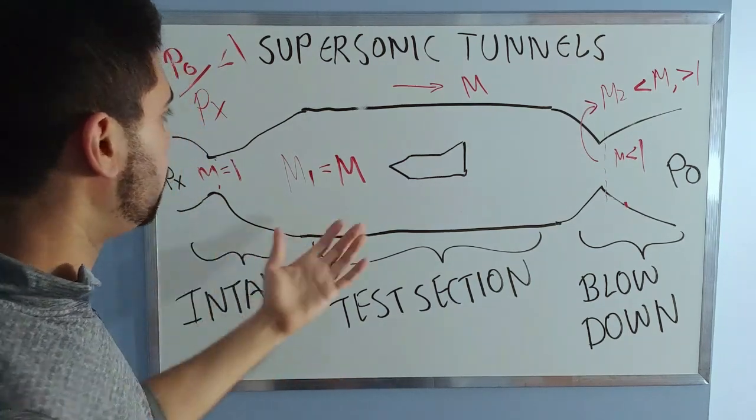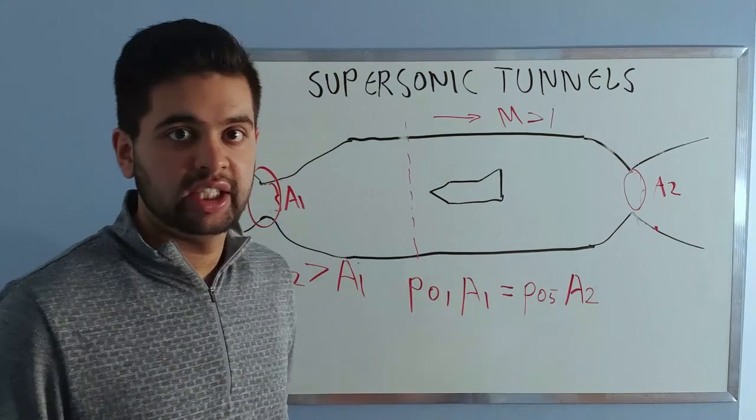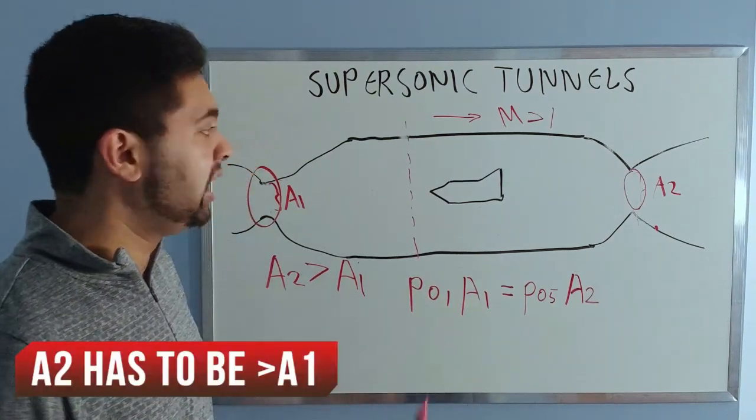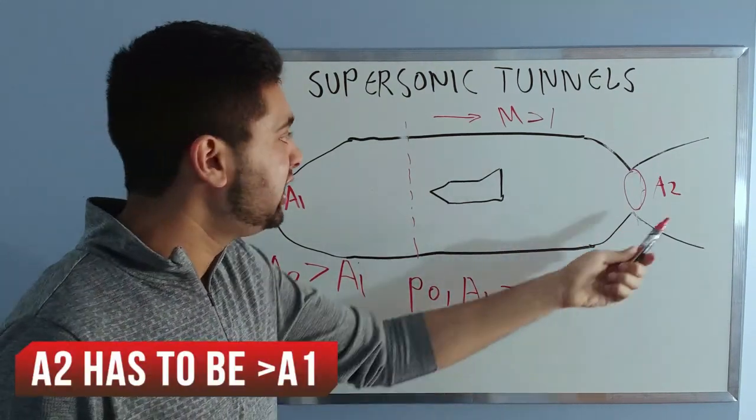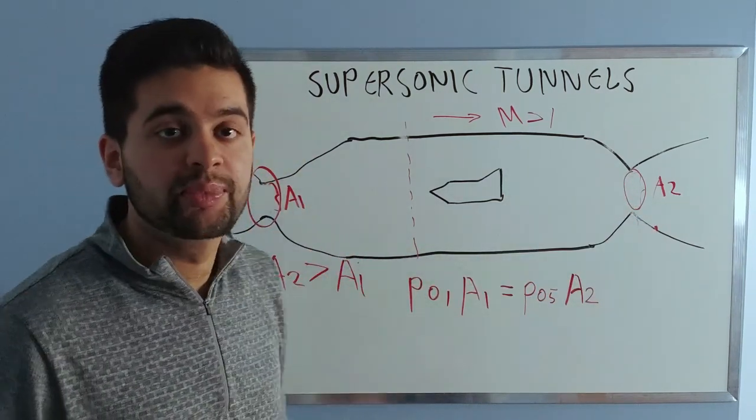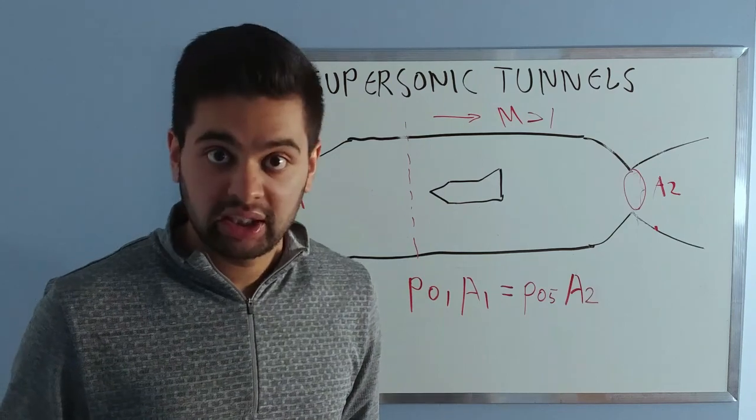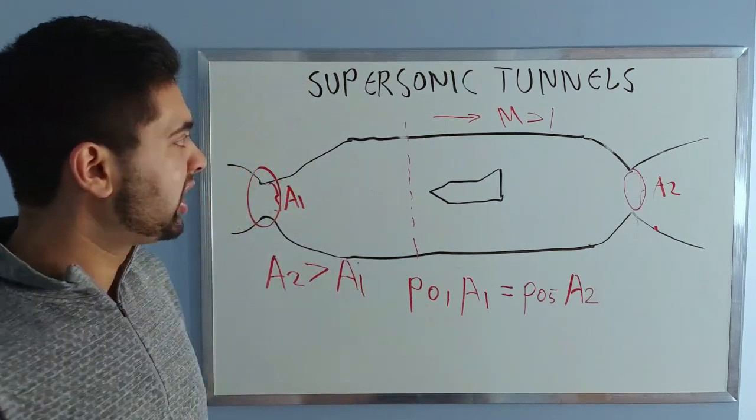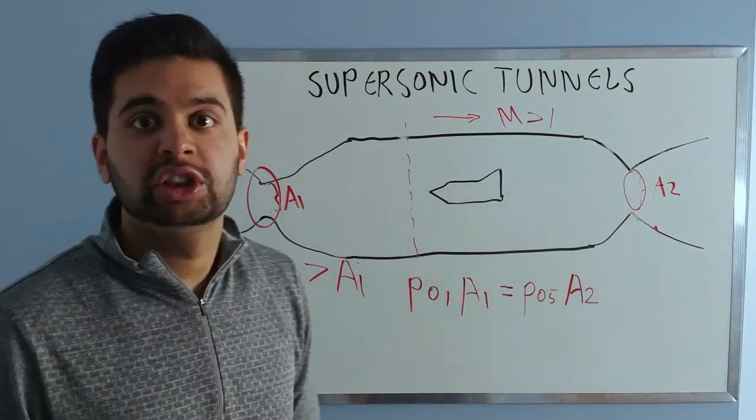The first important design rule in a supersonic wind tunnel is that if you ever design a wind tunnel where your A2, this area here, is not more than A1, you will lose your job in the next week. Why is that? Because you will not be able to start your wind tunnel at all. You will never achieve the supersonic flow which you want to achieve, which your wind tunnel is designed for.